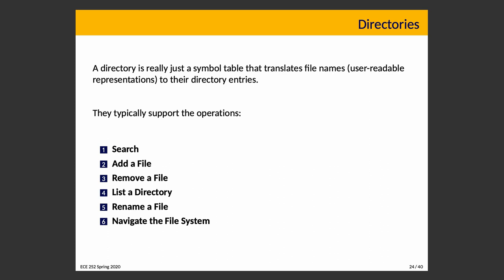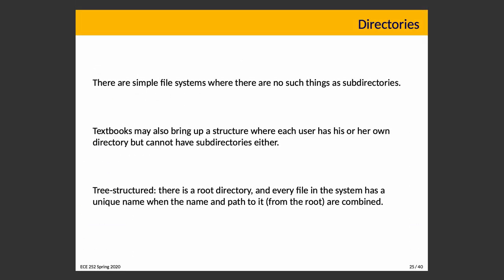Simple file systems with no folders or hierarchy exist in textbooks but no modern operating system works that way. What we have in basically every operating system is a tree structure: there is a root directory, and every file has a unique name when the path from the root is combined with its name. Normally when you open a file using a relative name like myfile.txt, adding the current directory gives you its absolute path — its unique name.